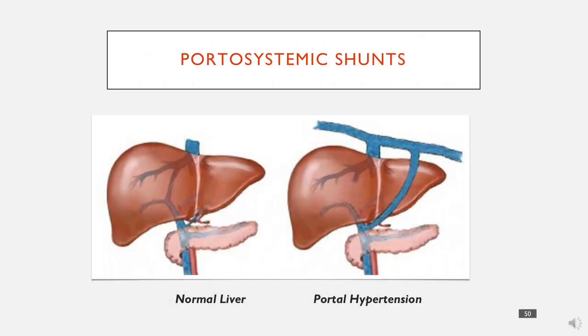Portalsystemic shunts, as the name suggests, are shunts — where blood is being diverted between the portal circulation and the systemic circulation. Essentially, blood is diverted from the hepatic portal vein into the systemic vein.